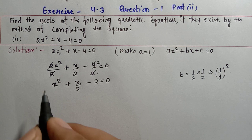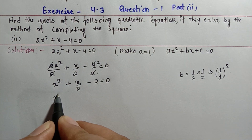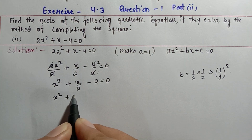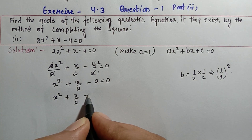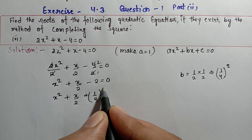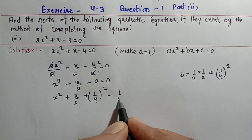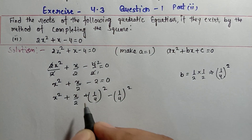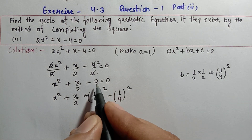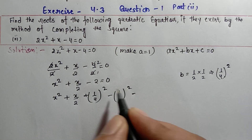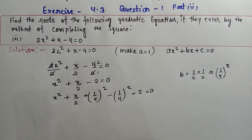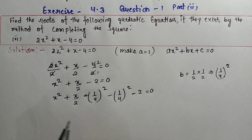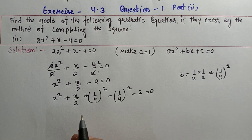So writing out the second step: x² + x/2 + (1/4)² - (1/4)² - 2 = 0. We have added and also subtracted (1/4)², keeping the constant term -2 at the end. Now for the third step, we need to form the completing the square identity.